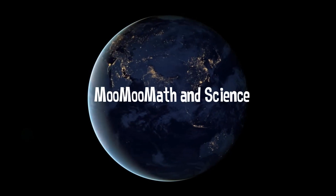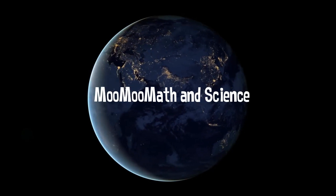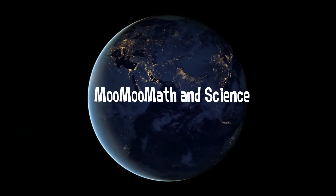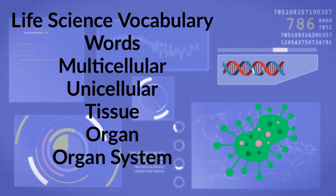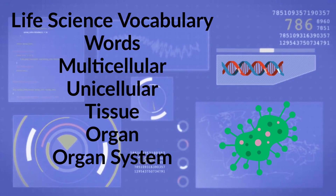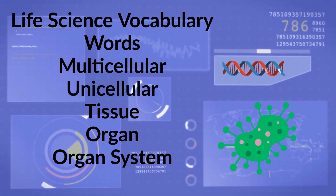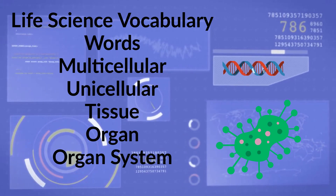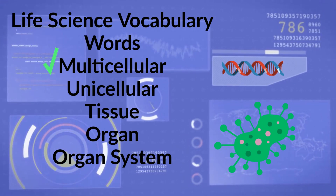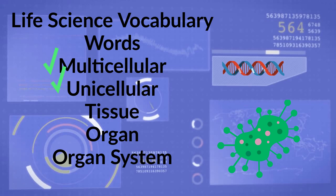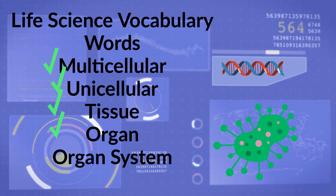Welcome to MooMooMath and Science. In this video, I'd like to go over the following life science vocabulary words: multicellular, unicellular, tissue, organ, and organ system.